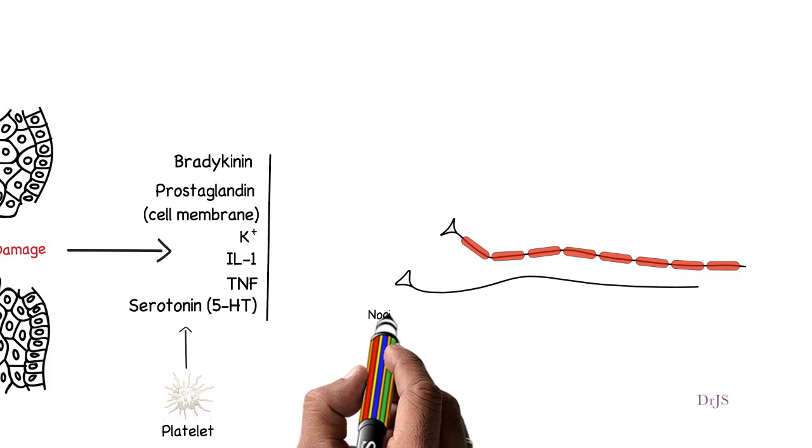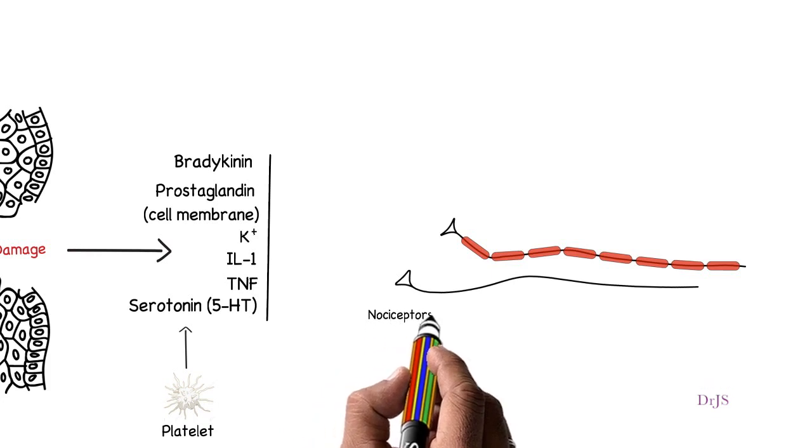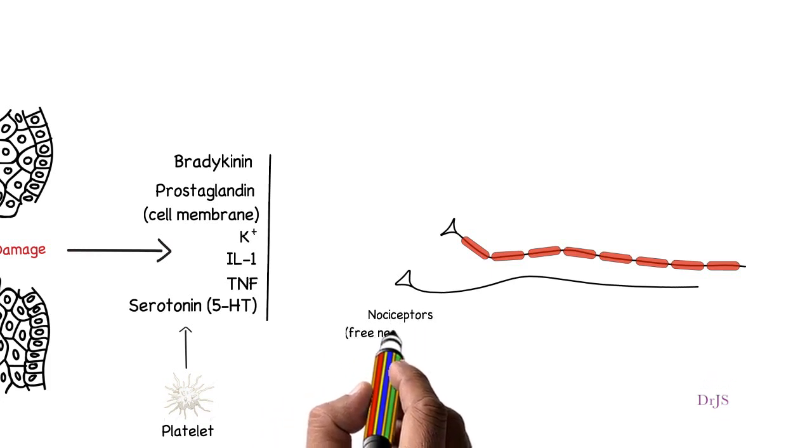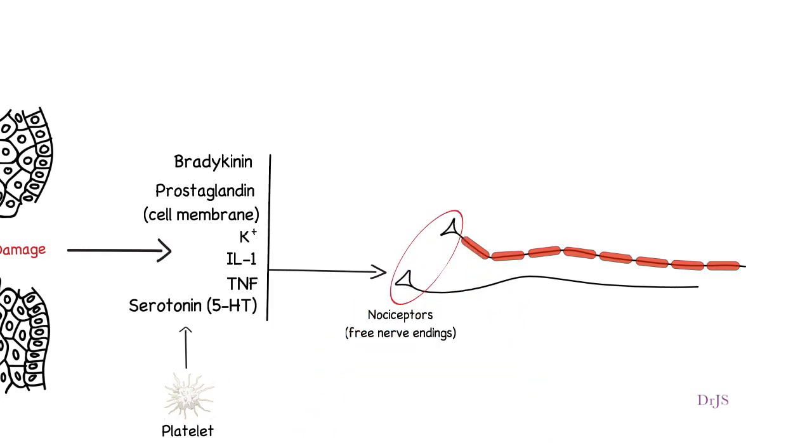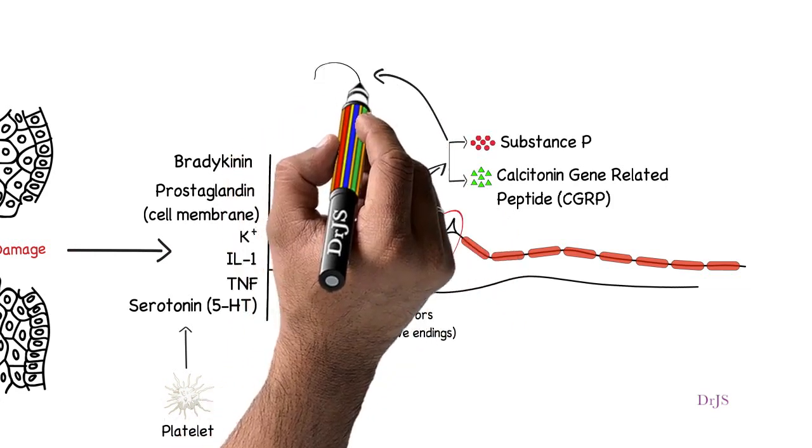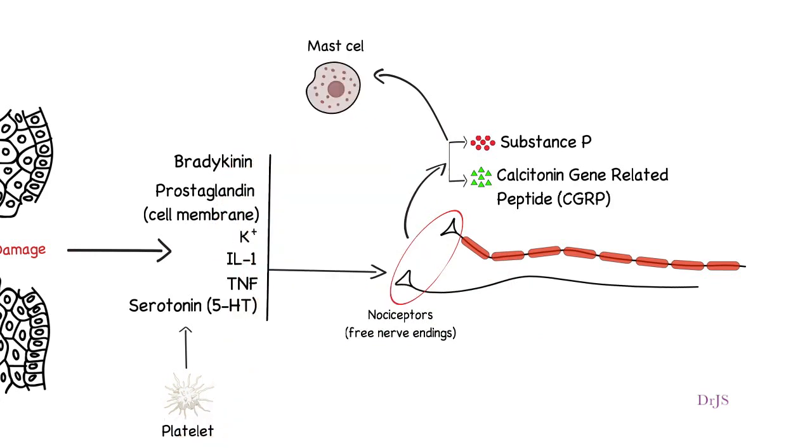The pain receptors in the skin and other tissues are all free nerve endings. These are called nociceptors. Stimulated free nerve endings release two chemicals: calcitonin gene-related peptide (CGRP) and substance P. These substances stimulate the mast cells to release histamine and nerve growth factors.